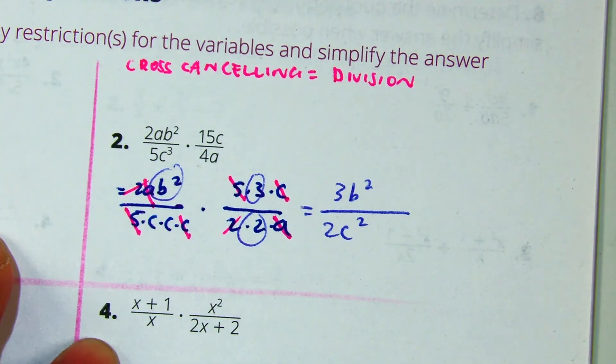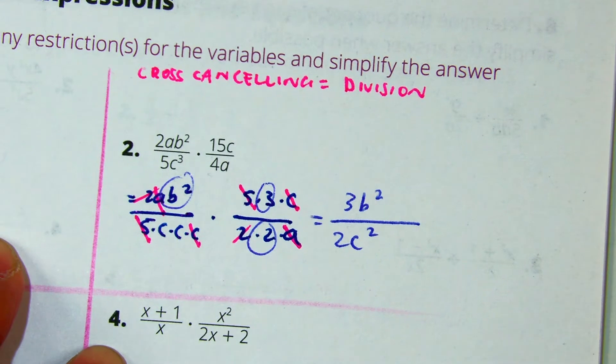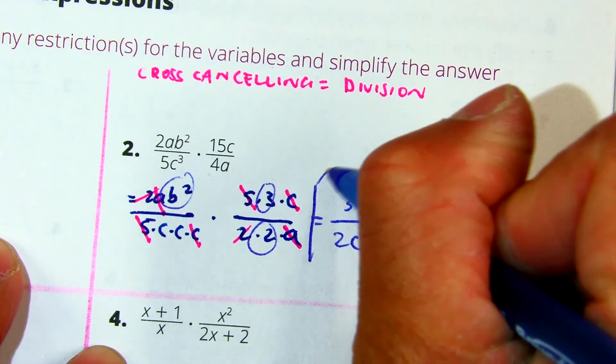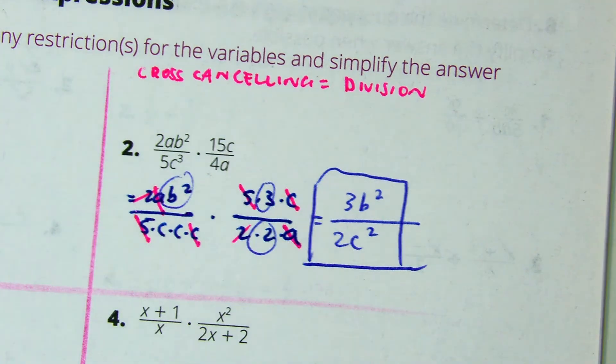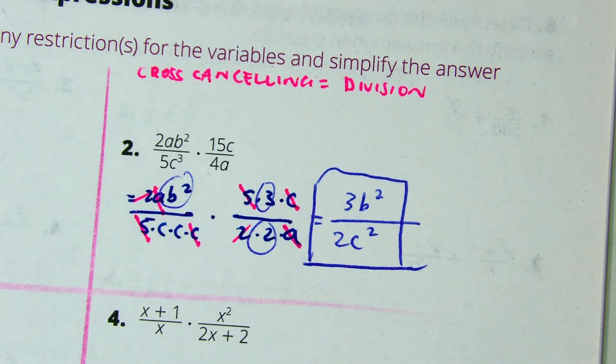Multiply each expression. We just did that. Now, we need to do the restrictions. Tell your partner, how did we do the restrictions previously?